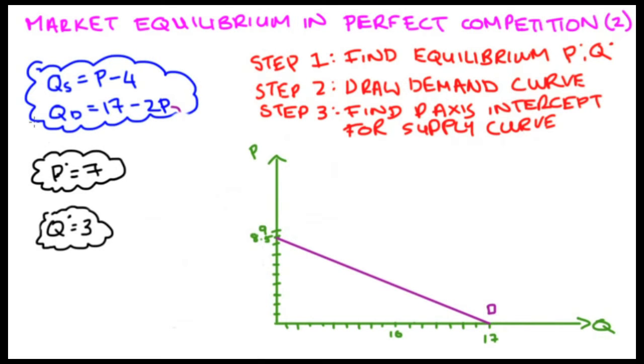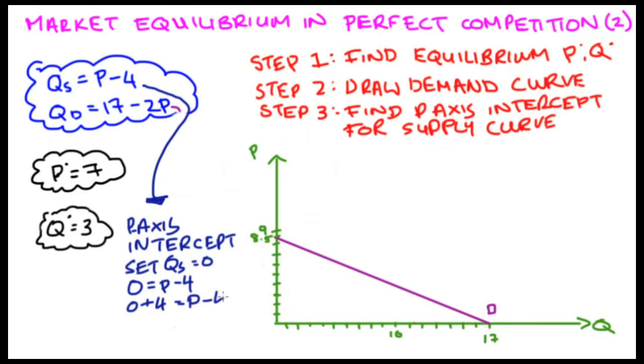For step 3, I'm going to find my price axis intercept for the supply curve. If you remember, our price axis intercept was when Q, the quantity, was equal to 0. In this case, the quantity is supplied. So I'm going to set Qs equal to 0. So I get 0 is equal to P minus 4. Let's plus 4 to both sides, and I get P is equal to 4. That's our price axis intercept.